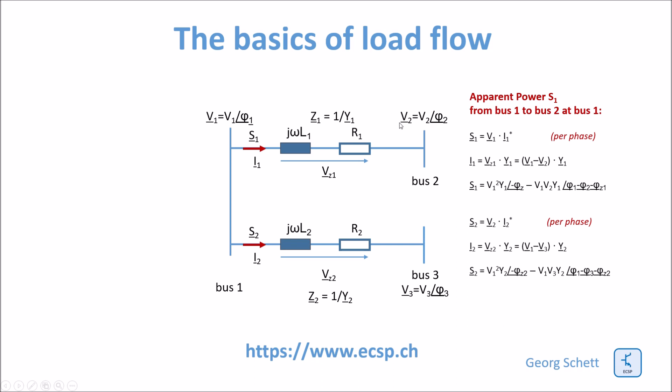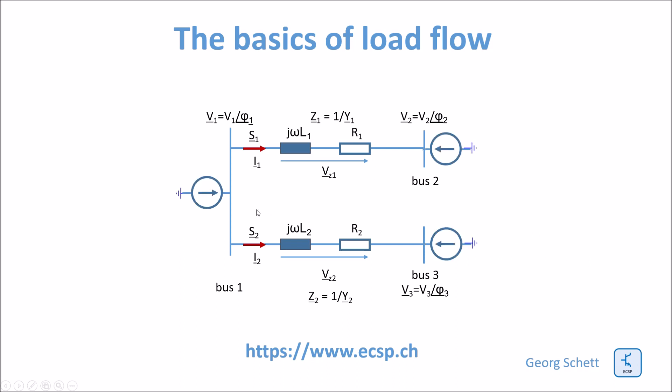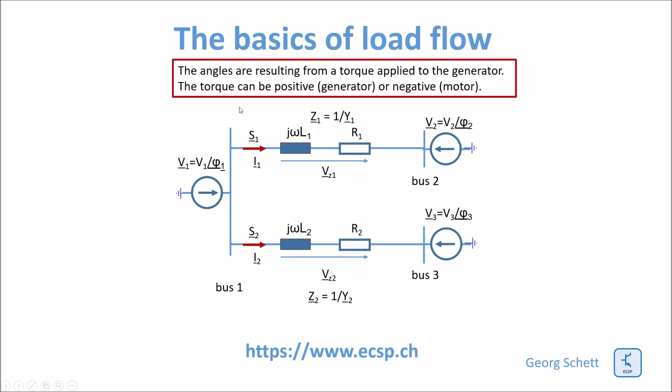If you want to model such a system now, we would add voltage sources to the buses and the voltage sources would have the voltage magnitude and the phase angle. So you see these are the phasors per source. In the real system these angles are resulting from a torque applied to the generator. The torque can be positive then you generate electricity, or it can be negative and then you consume electricity in form of a motor.